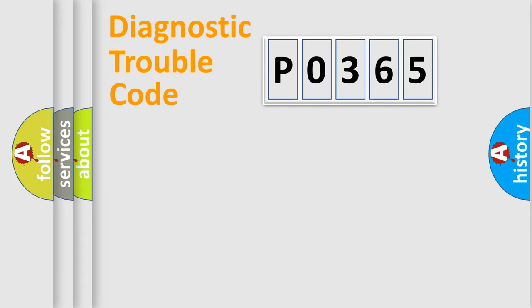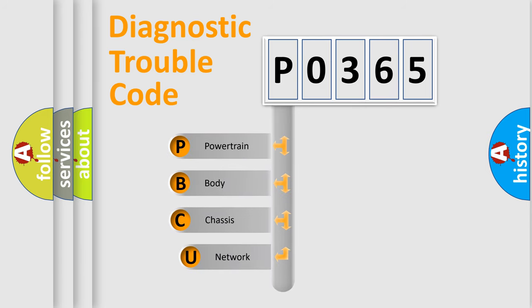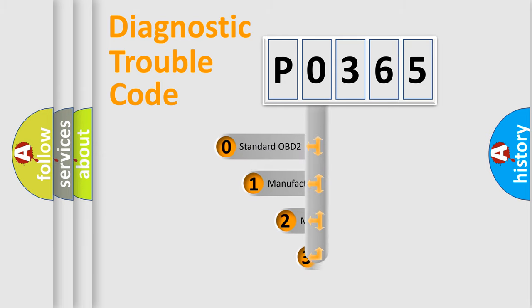First, let's look at the history of diagnostic fault code composition according to the OBD2 protocol, which is unified for all automakers since 2000. We divide the electric system of an automobile into four basic units: Powertrain, Body, Chassis, and Network. This distribution is defined in the first character of the code.